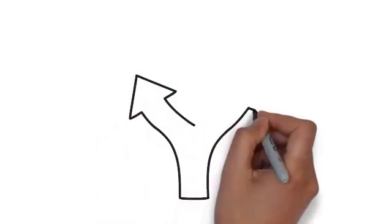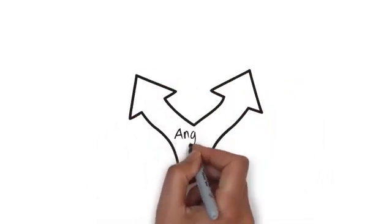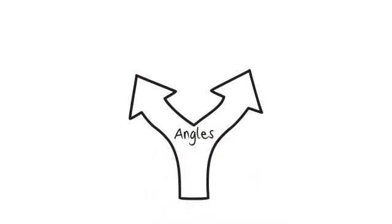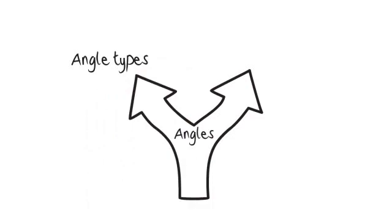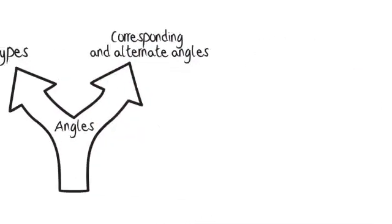So, let's move on to angles. Now, if you didn't get a good grasp of probability, please do revisit the topic. In angles, we're going to be focusing on two main subtopics: angle types and corresponding and alternate angles.